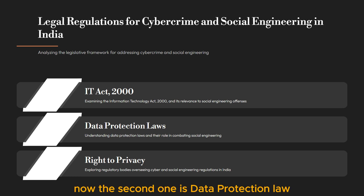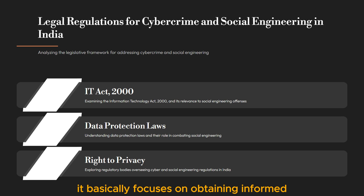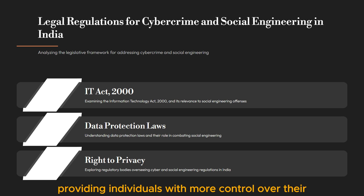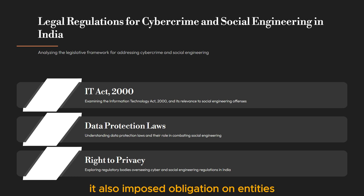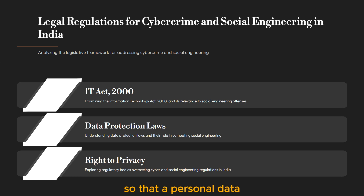The second legal framework is Data Protection Law, under which comes the Personal Data Protection Bill 2019. It focuses on obtaining informed consent for data processing, including providing individuals with more control over their personal information. It also imposes obligations on entities to implement security measures to protect the confidentiality and integrity of data, so that personal data remains personal.